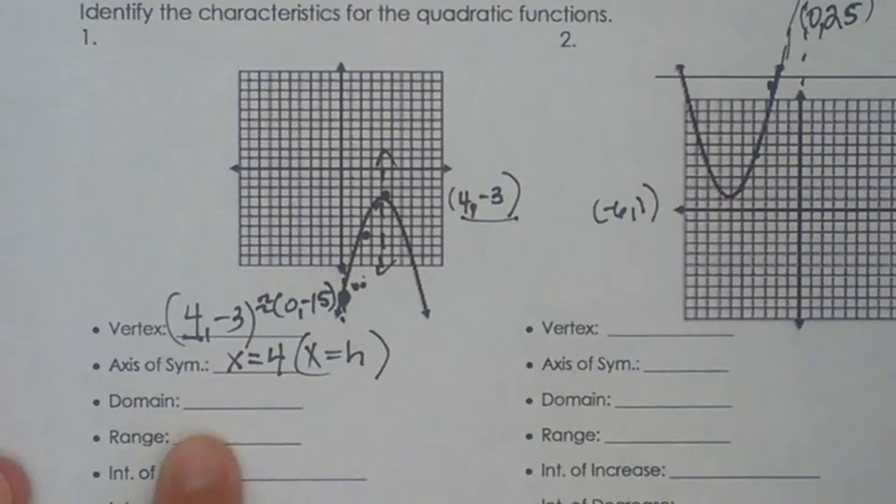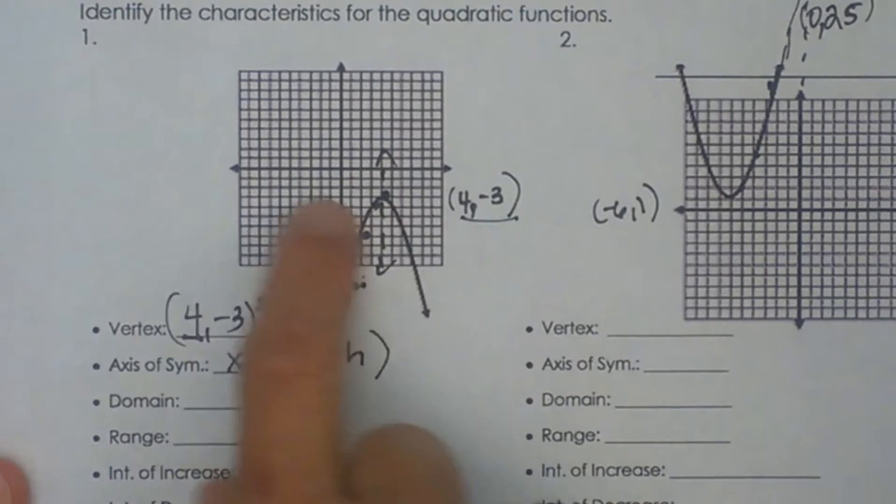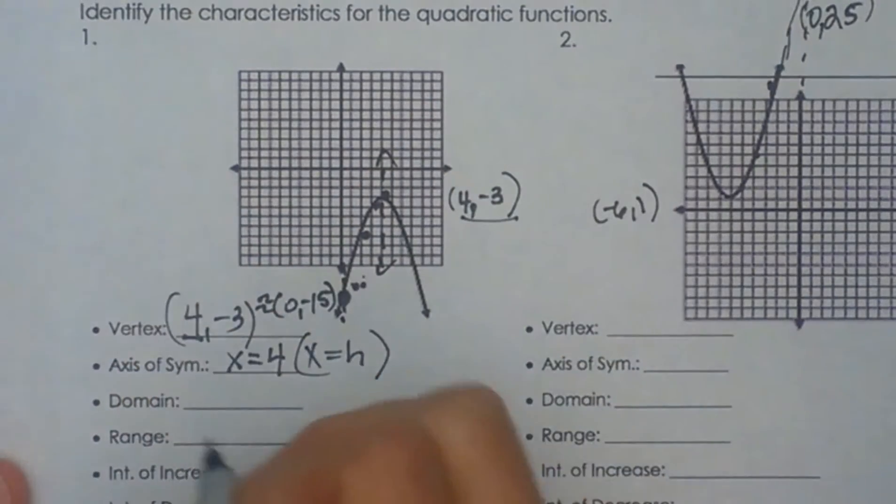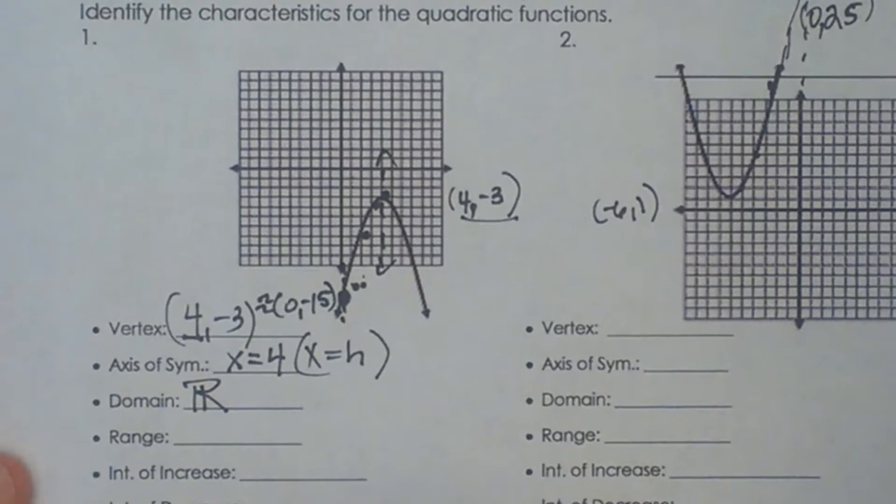The domain. Domain is the values you can plug in for x and because this graph goes left forever and right forever and there is no limit that means it is all real numbers. So any value can be plugged in for the domain.